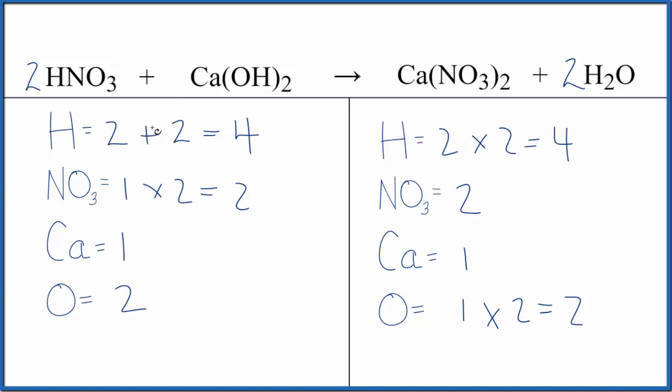If we were to write the states, they would look like this. This is Dr. B with the balanced equation for HNO3 plus Ca(OH)2, nitric acid plus calcium hydroxide. We also looked at the type of reaction, which is a neutralization reaction, and it's also double displacement.